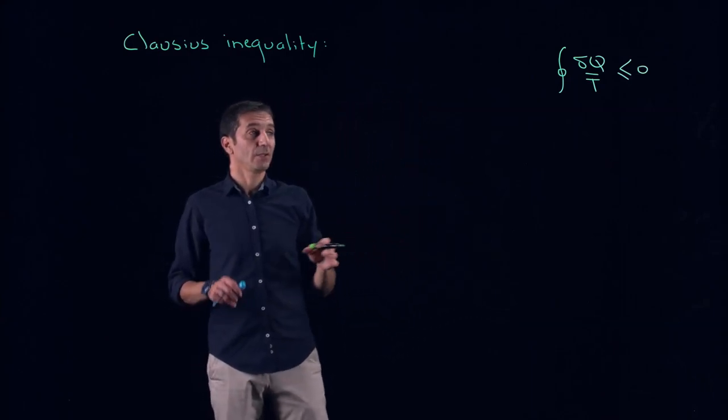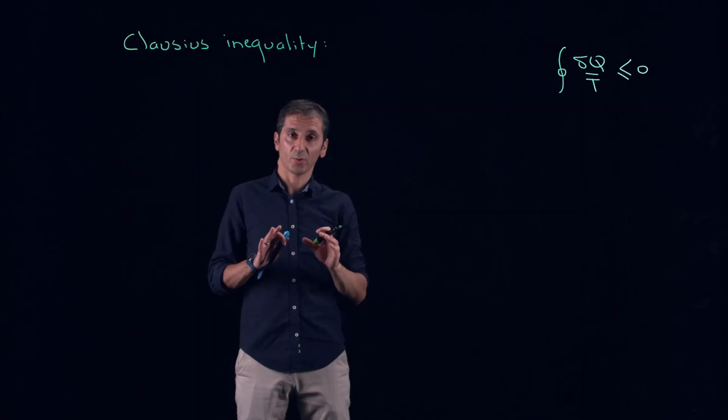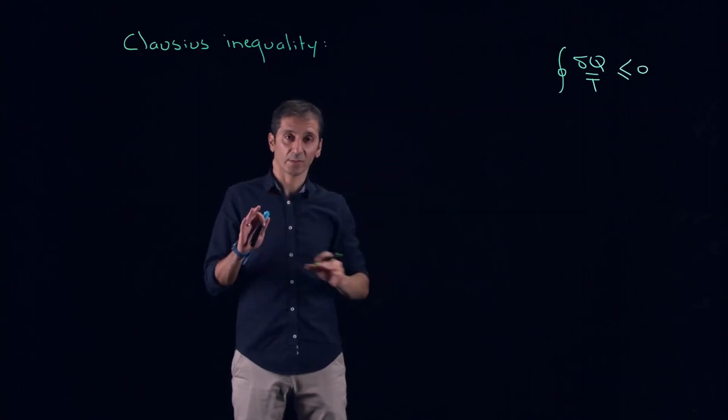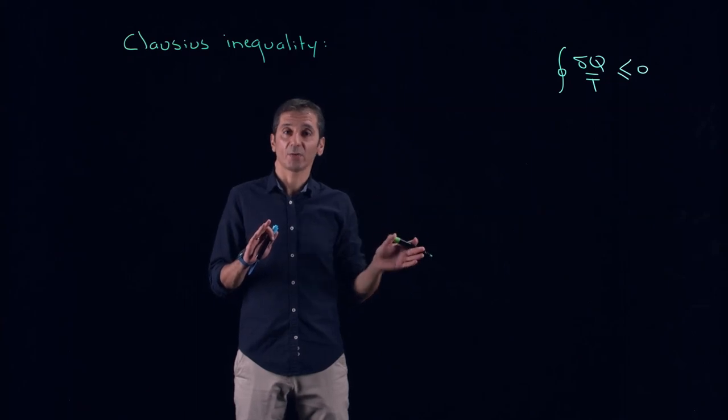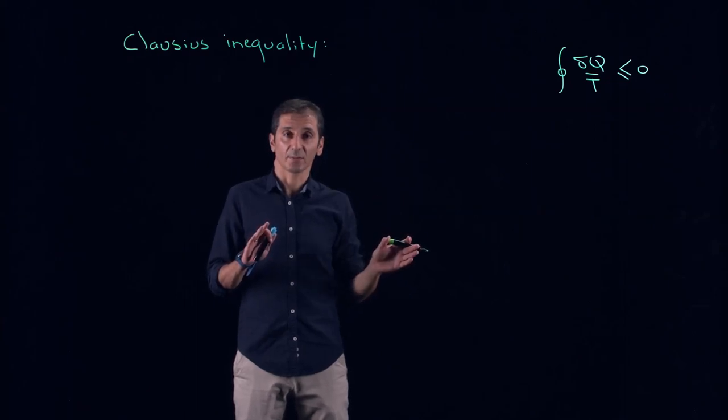Otherwise, if you sum up delta Q over T everywhere in your cycle and you end up with something positive, this means that you are violating the second law of thermodynamics.